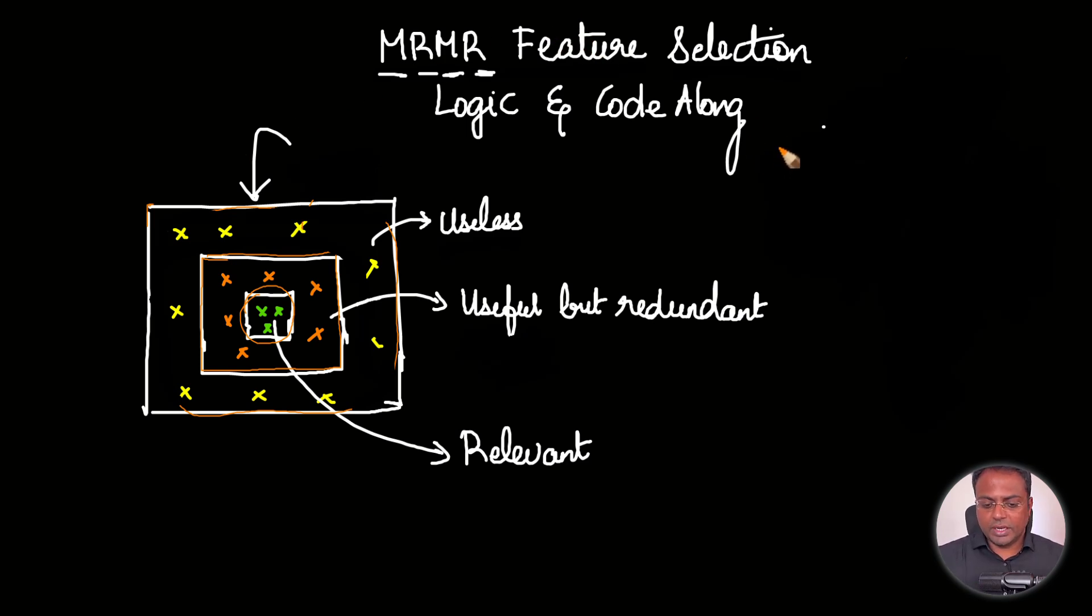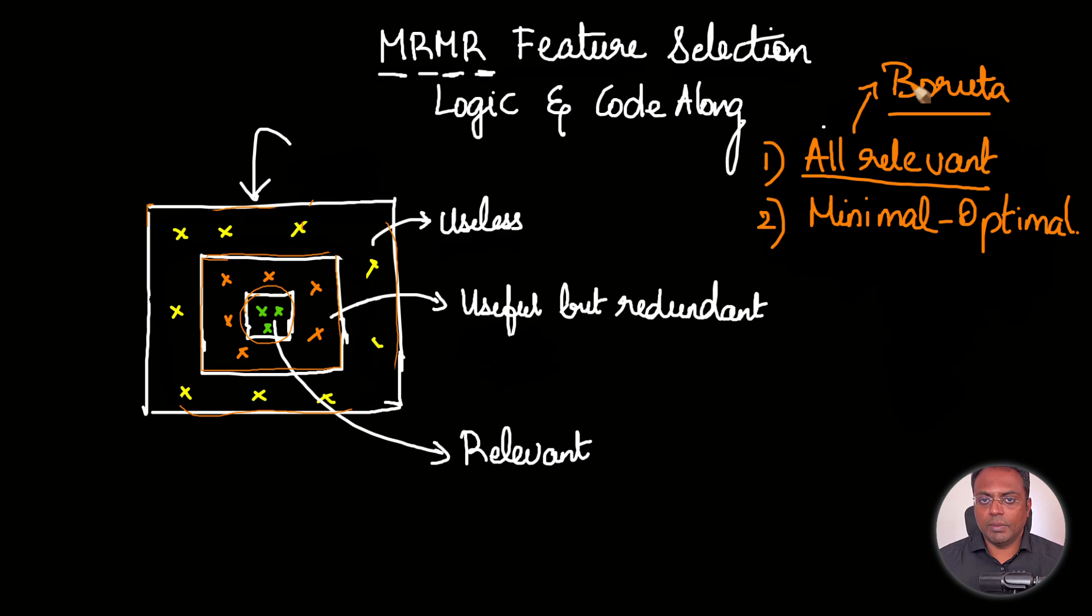When it comes to feature selection, there are two main types. One is an all-relevant approach, and the second type is the minimal-optimal. As the name suggests, an all-relevant approach, for example, a popular technique for this will be Boruta. We will talk about this in detail in the next video. And minimal-optimal would be the MRMR.